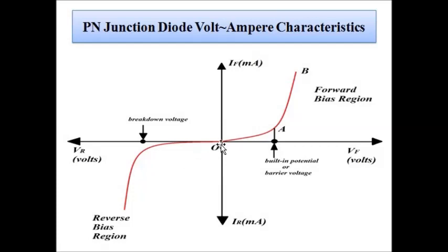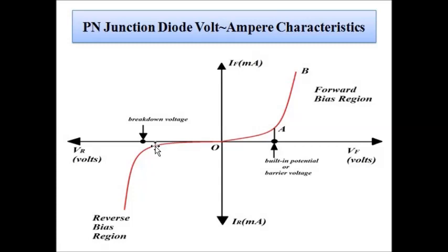In the reverse bias condition, as seen on the plot, there is negligible flow of current — almost zero — up to a certain value of reverse voltage. That value is called the breakdown voltage. Up to the breakdown voltage, the very small current that flows is due to minority charge carriers.